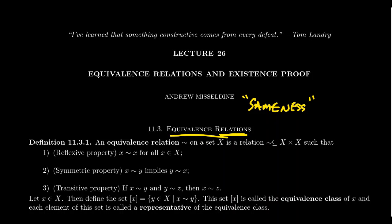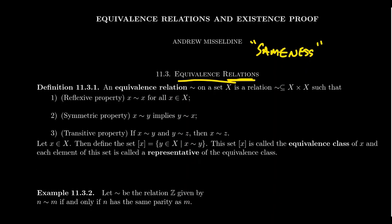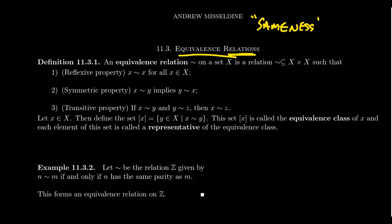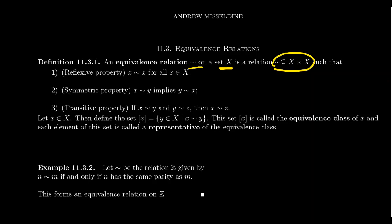Let's be explicit in the definition. An equivalence relation, first and foremost, is a relation. So we have some set X, and tilde is an equivalence relation. It will be a subset of the Cartesian product X cross X.